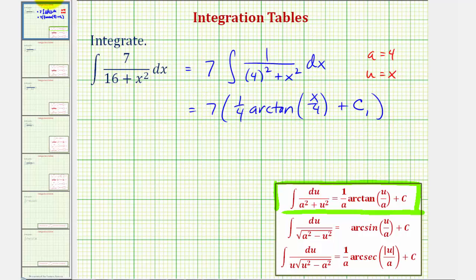So now we'll distribute the seven. So the anti-derivative function would be seven-fourths arctangent x divided by four, plus,